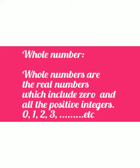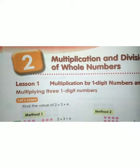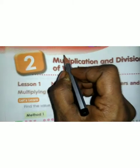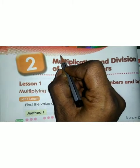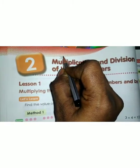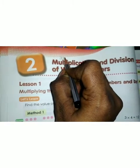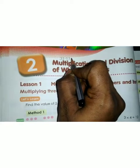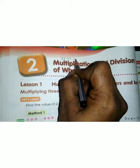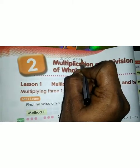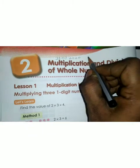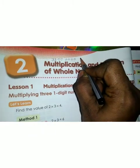Take page number 38 in your book and write today's date as 31/07/2020, and write it as classwork.